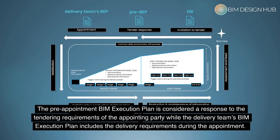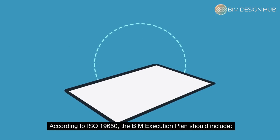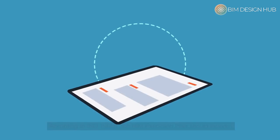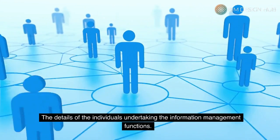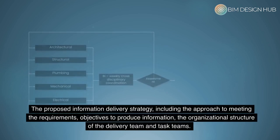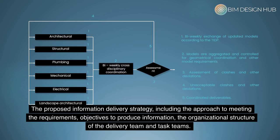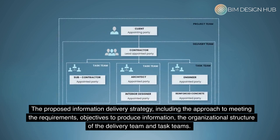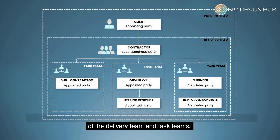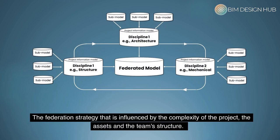The pre-appointment BIM Execution Plan is considered a response to the tendering requirements of the appointing party, while the delivery team's BIM Execution Plan includes the delivery requirements during the appointment. According to ISO 19650, the BIM Execution Plan should include the details of the individuals undertaking the information management functions, the proposed information delivery strategy including the approach to meeting the requirements, objectives to produce information, and the organizational structure of the delivery team and task teams. It also covers the federation strategy that is influenced by the complexity of the project, the assets and the team's structure.